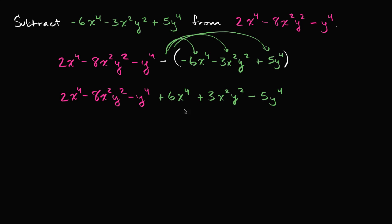Now we can try to simplify. Let's first look at the x to the fourth terms. We have 2x to the fourths, and we can add that to 6x to the fourths. If I have 2 of something and then I add another 6 of that something, that's going to be 8x to the fourths. So 2x to the fourth plus 6x to the fourth equals 8x to the fourth power.